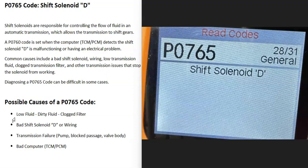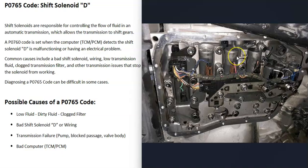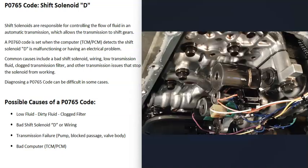Today I'm talking about a P0765 code — what it is and how you could go about fixing it. A P0765 code is a shift solenoid D code. Transmissions have a lot of solenoids built into them, and the computer uses these solenoids to control the flow of transmission fluid throughout the transmission, which allows the transmission to shift gears at the right time. When you get a P0765 code, the computer is seeing a problem with that shift solenoid D.